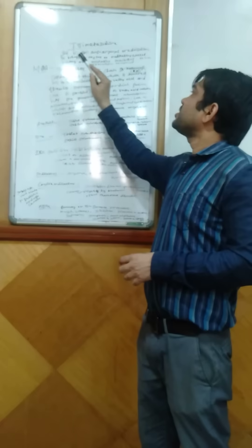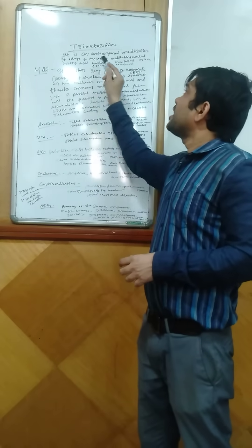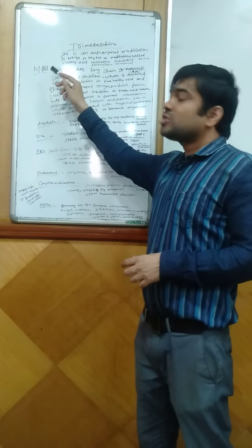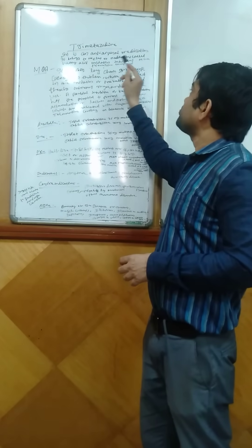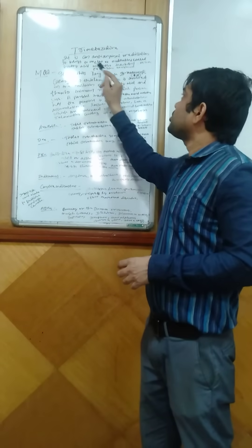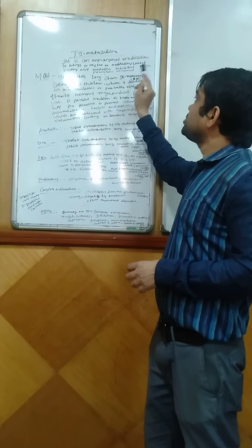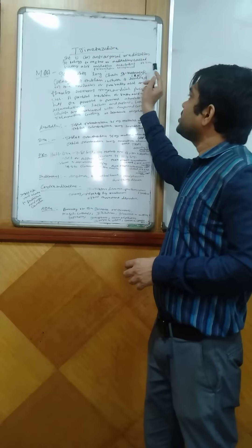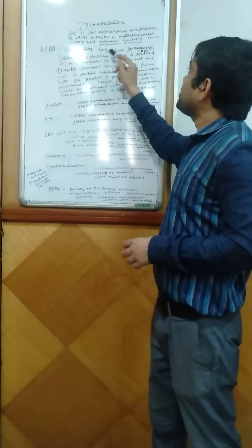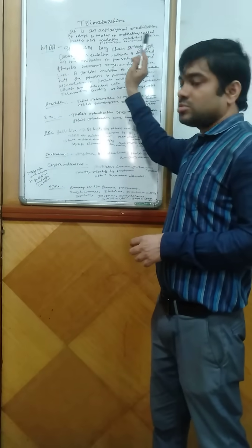We all know that Trimetaghidine is an anti-anginal medication. It belongs to the class of medications called fatty acid oxidation inhibitors, and it is a piperazine compound.